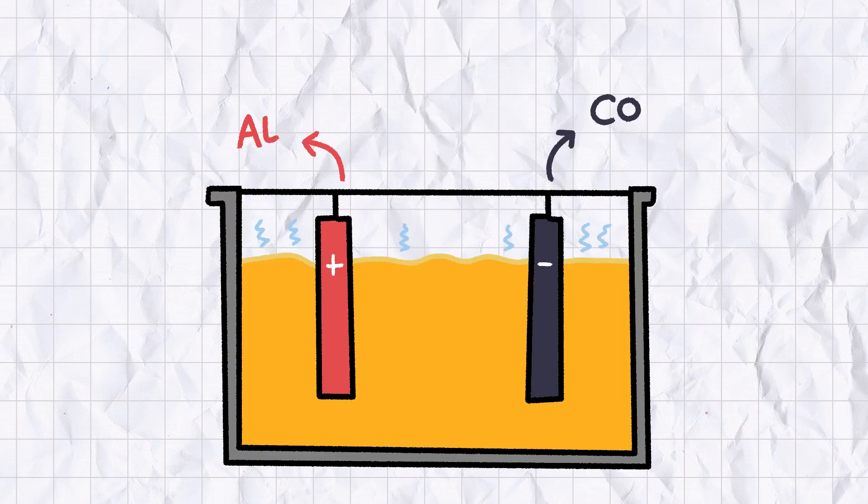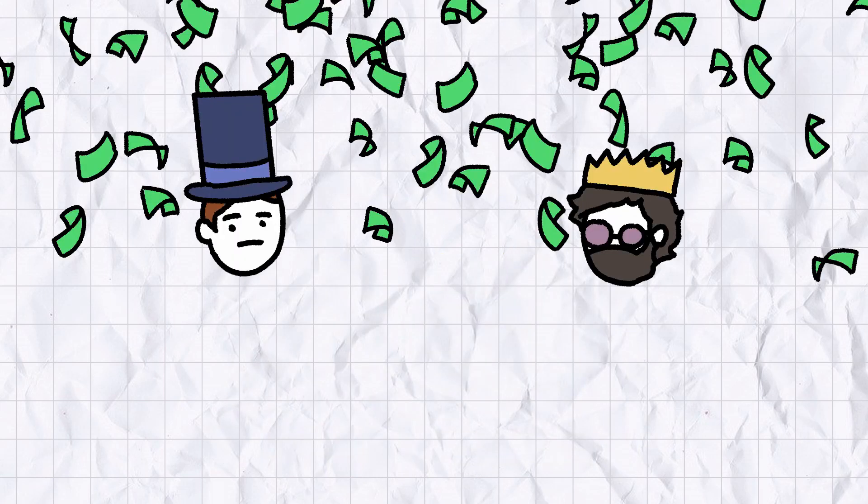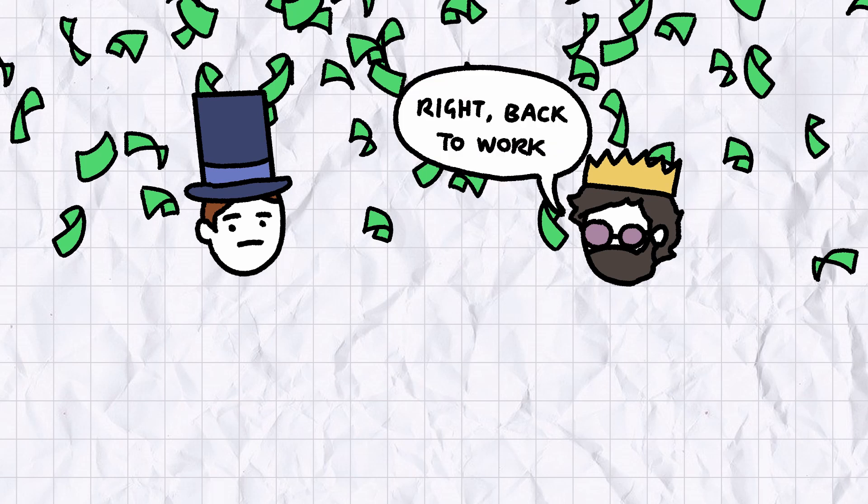The Hall-Heroult process still required high temperatures, but the reagents were cheap, and the purity was consistently over 99%. Both Hall and Heroult became fantastically wealthy as the result of their work, but neither of them were content to sit on their laurels.